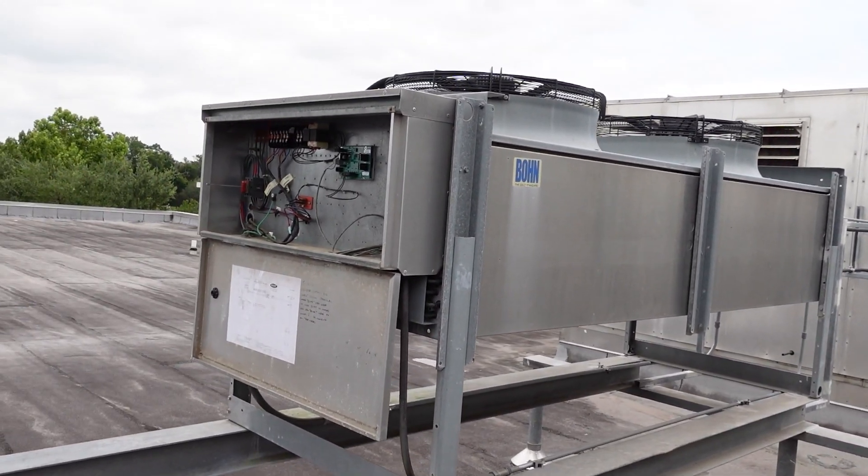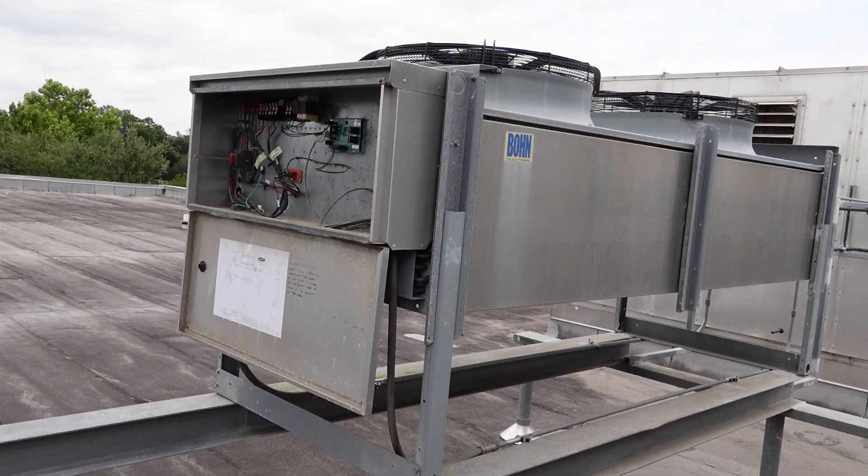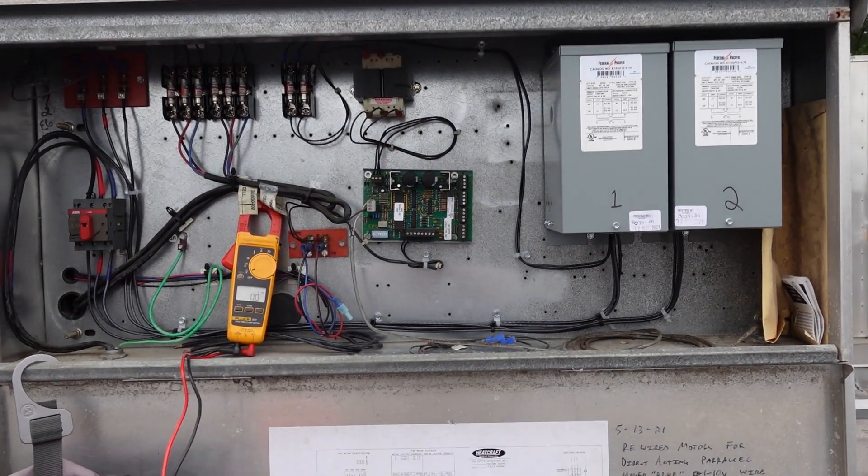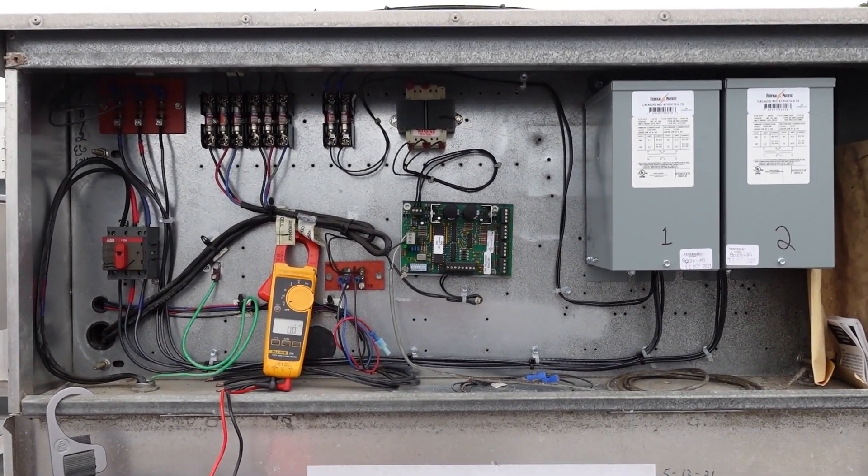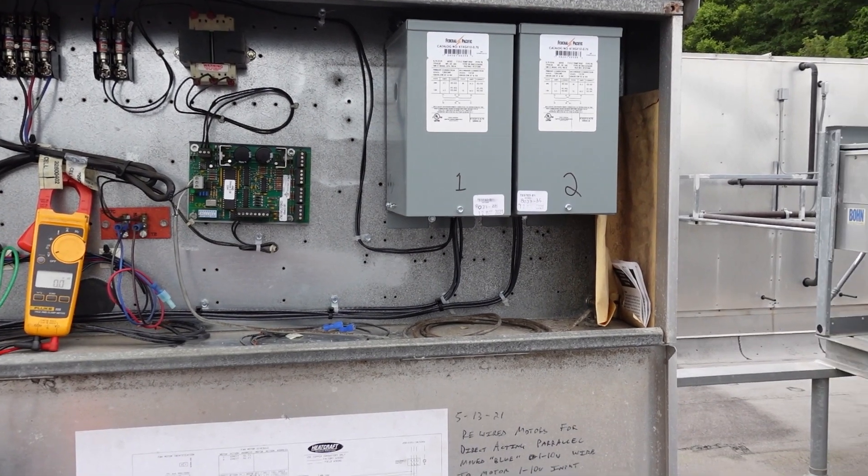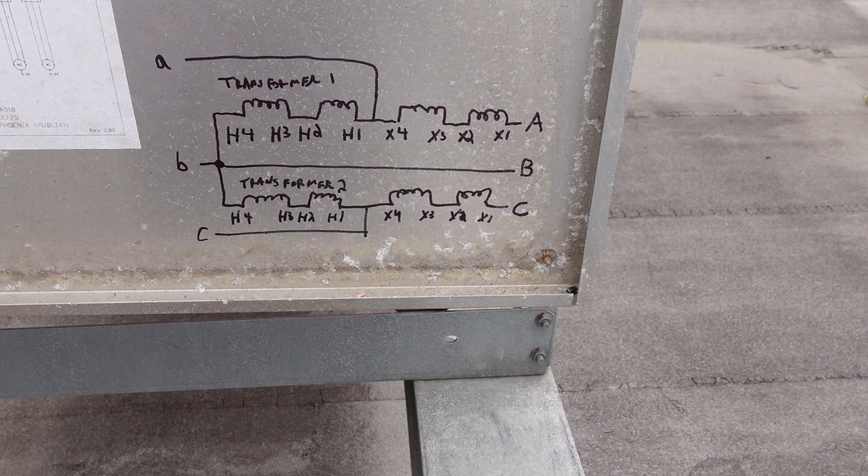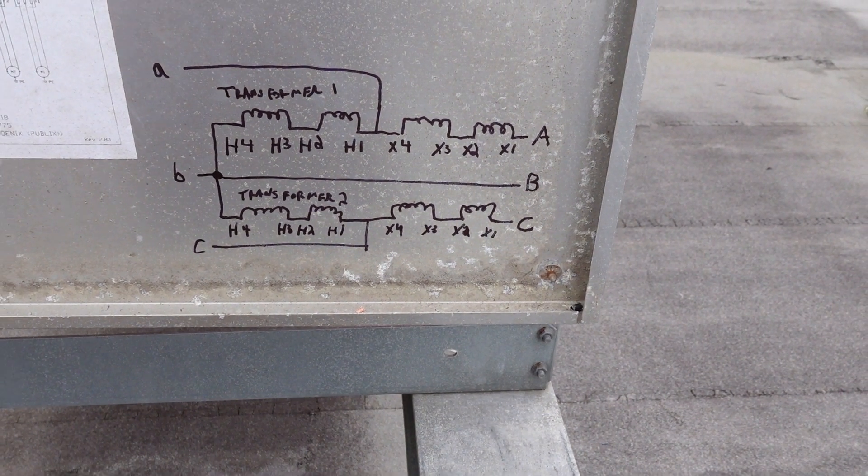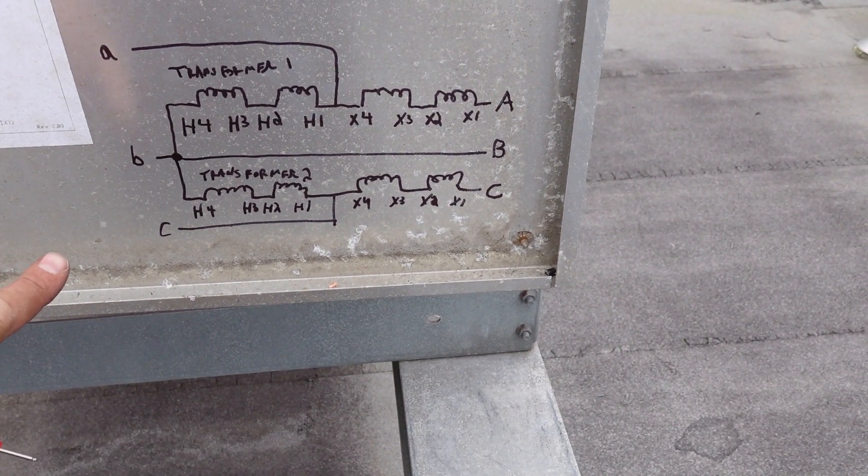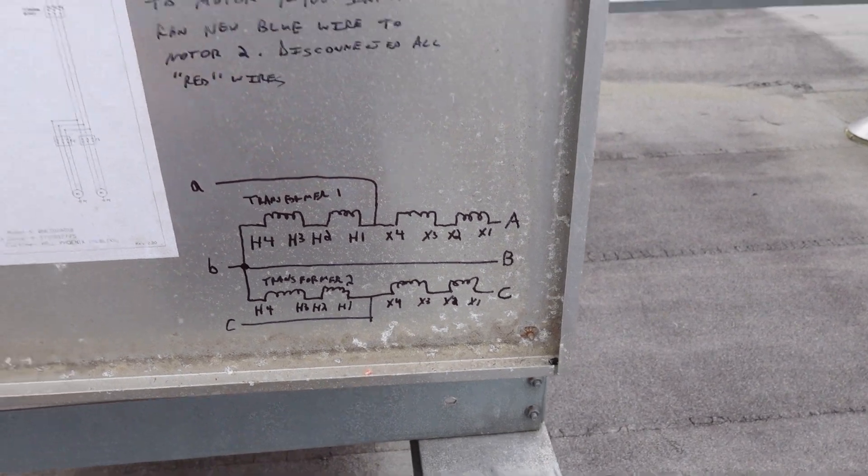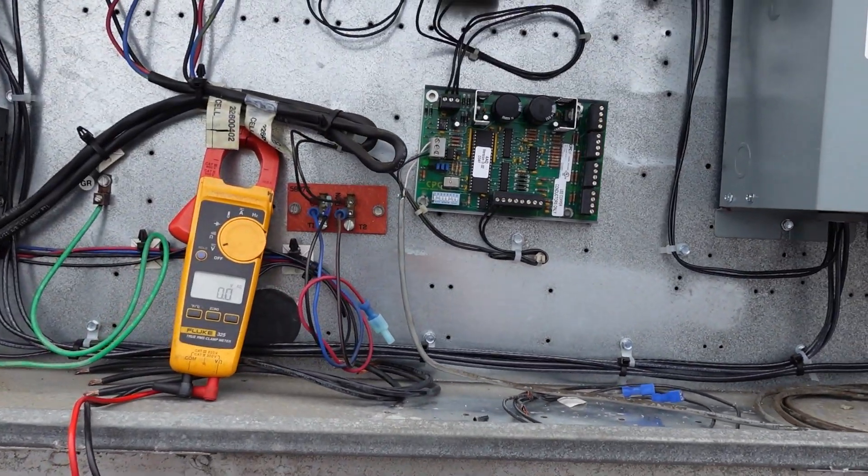Now that is how this condenser looked before. This is how it looks now. We moved the circuit board over and installed two transformers. Here's the schematic for the transformers. On the left is incoming power, low voltage, on the right is high voltage.